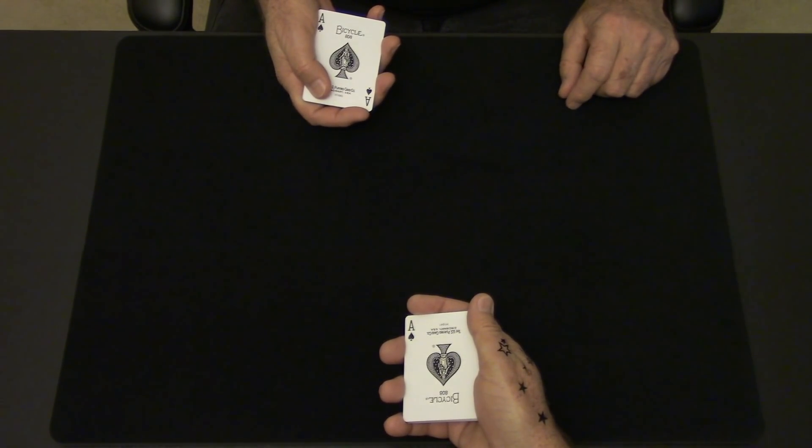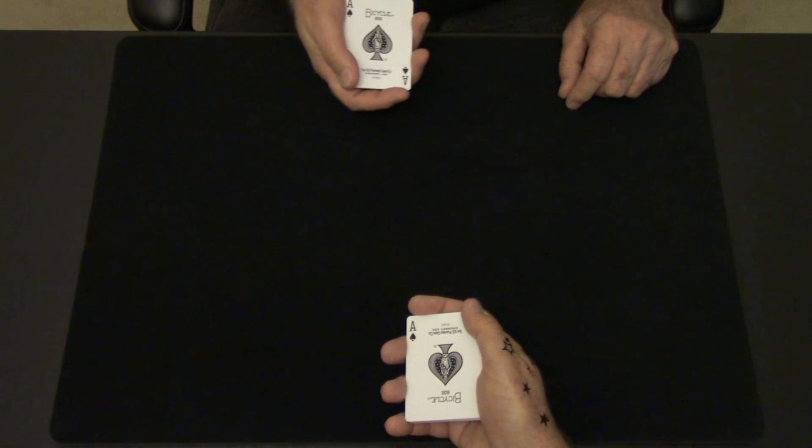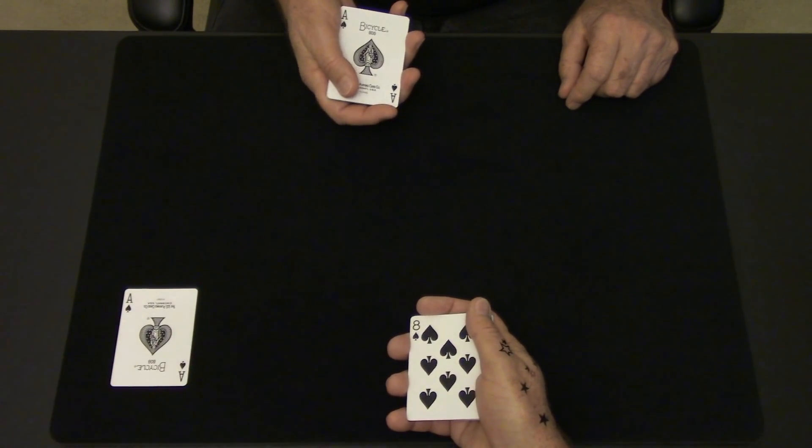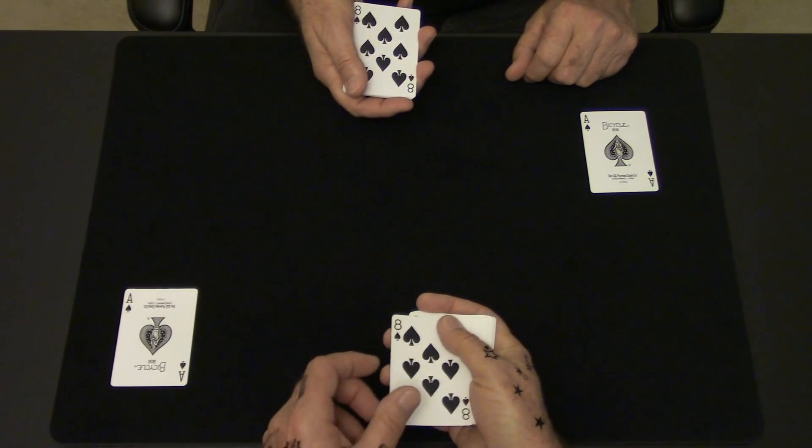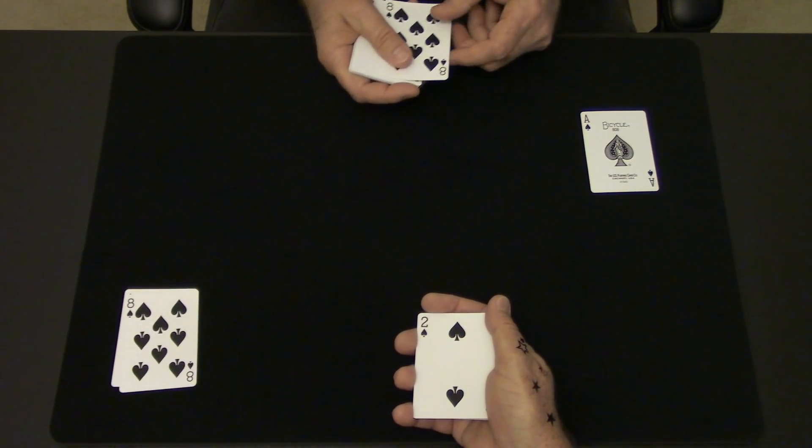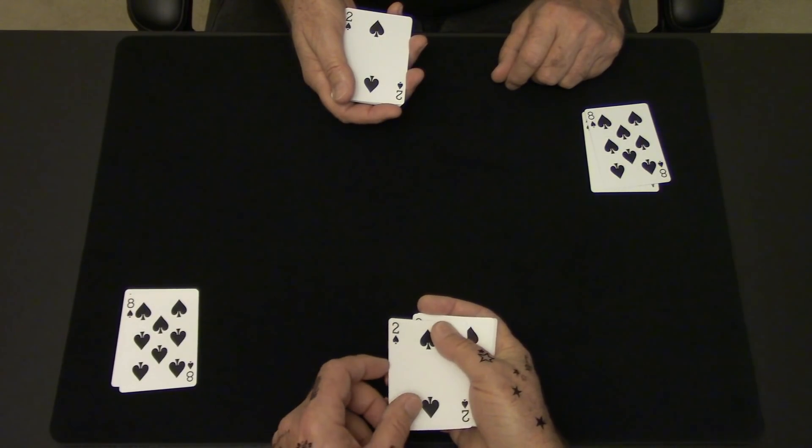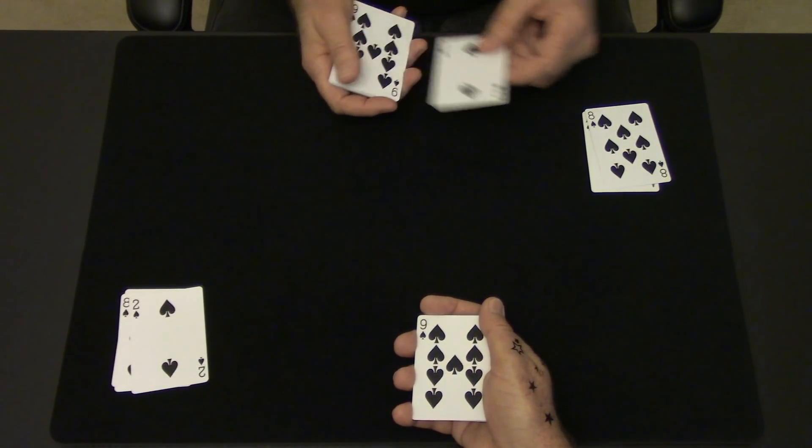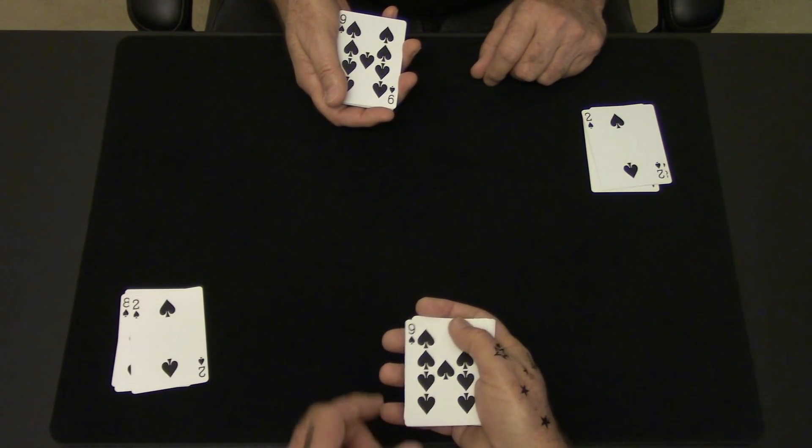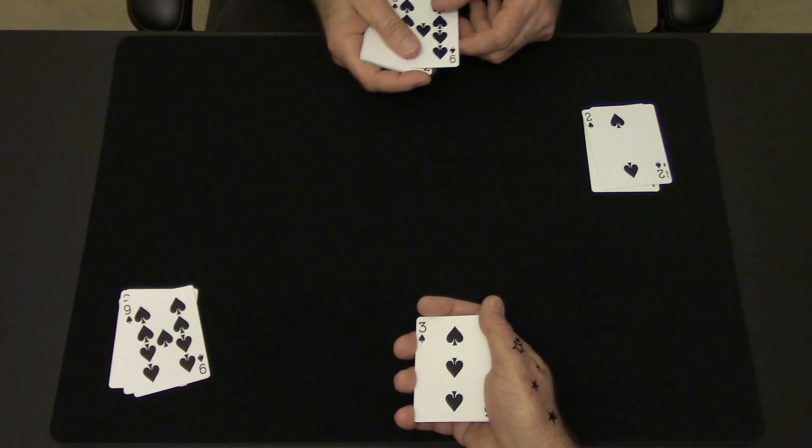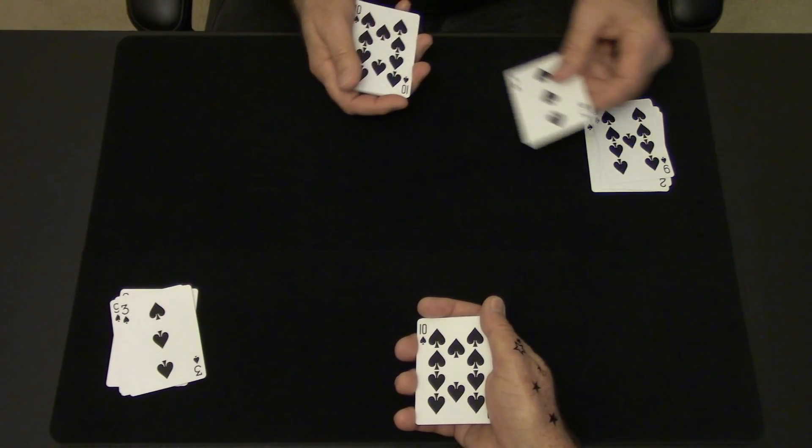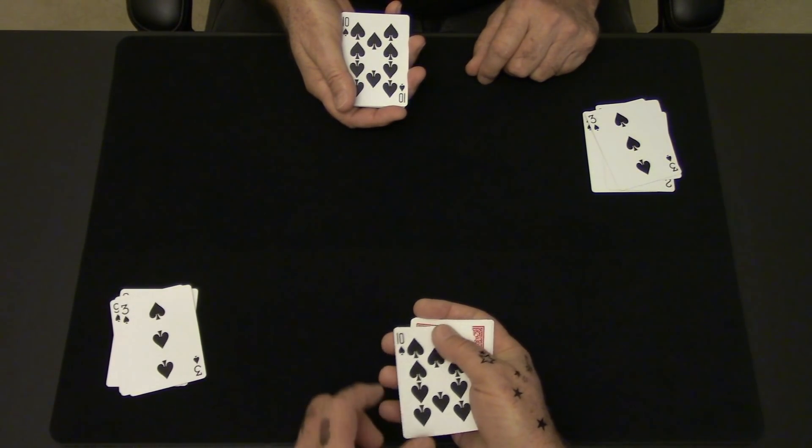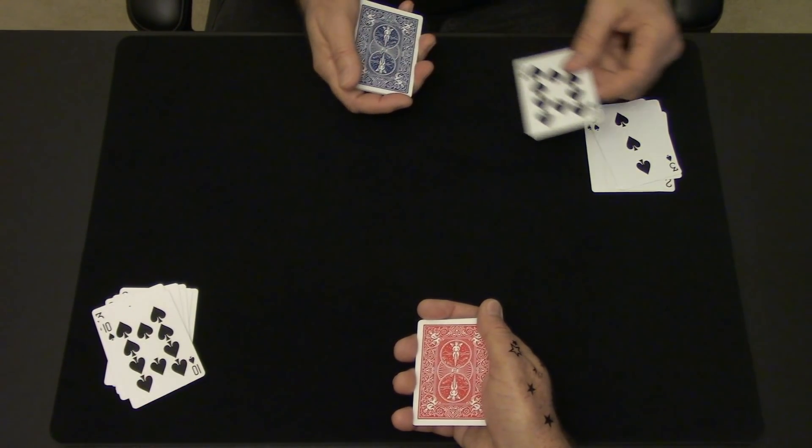I know. Not so amazing. Deal the ace down and let's see the next card. You have the eight. I have the eight. Keep going. You have the two. I have the two. You have the nine. I have the nine. You have the three. I have the three. You have the ten. I have the ten.